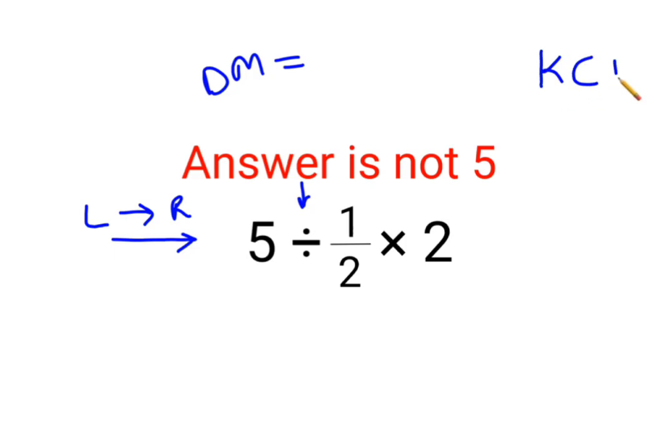Whenever there is a fraction involved, we will follow the rules of KCF in case of division. K stands for keeping the first number as it is. C stands for changing the division sign to multiplication. F stands for flipping or taking reciprocal of 1/2 which is 2 multiplied by 2.